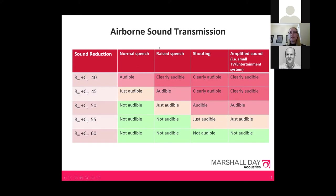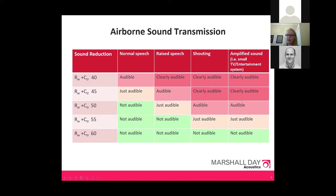To put airborne performance in context: a wall with a rating of 40 means you'd hear pretty much everything on the other side. The NCC building code performance requirement is 50 — at that level you'd hear raised speech and definitely a sound system. For very high sound insulation performance, you'd need to go to around 60, which is not easy to achieve.